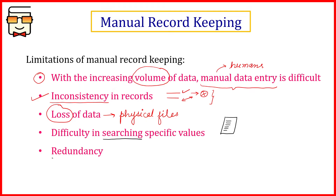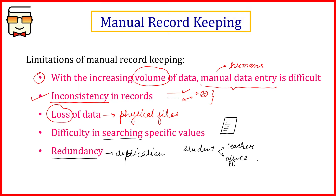The next point is redundancy. If two different people are maintaining the record for the same person in two different areas, then redundancy happens. For example, in a school, the record of a student is being stored by the teacher and by the office. If any change happens — say the student changes his name — if the office updates it and the teacher also updates it, then the same information is present at two different places. It is redundant, duplicate, and unnecessary. There should be only one place where the same information is stored.